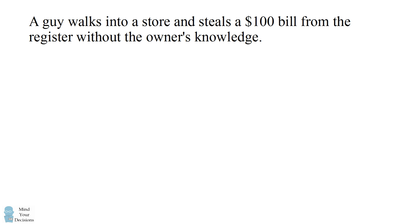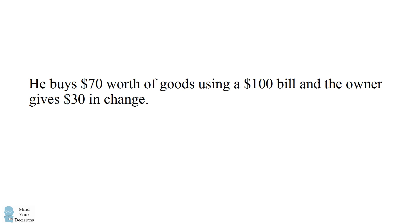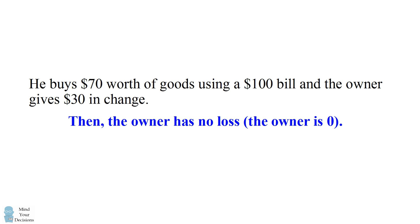So now, let's separately consider just the second part of the story. Imagine someone buys $70 worth of goods using a $100 bill and the owner gives $30 in change. How much would you say the owner has lost in just this part of the story? Well, if someone buys $70 worth of goods using a $100 bill, you would expect the owner to give $30 in change. In fact, the owner is overseeing this transaction, so the owner here is not losing any money — the owner is $0 in this transaction.